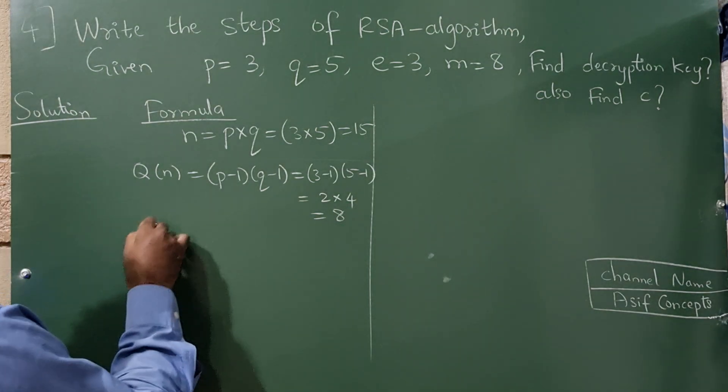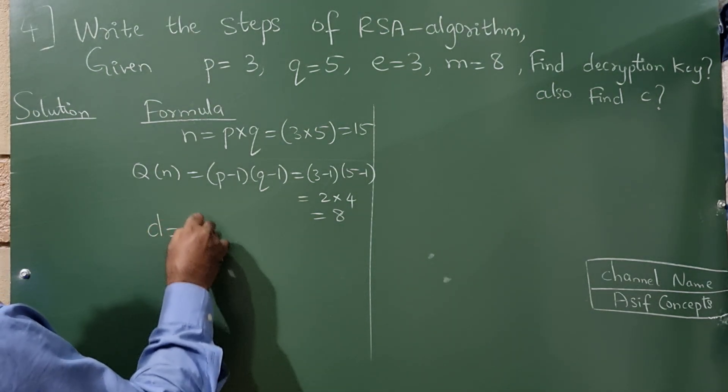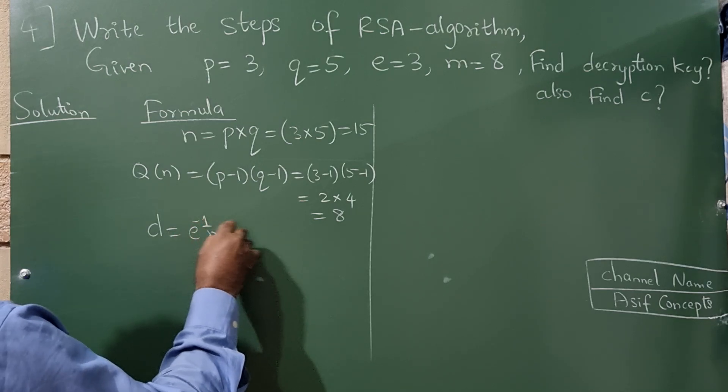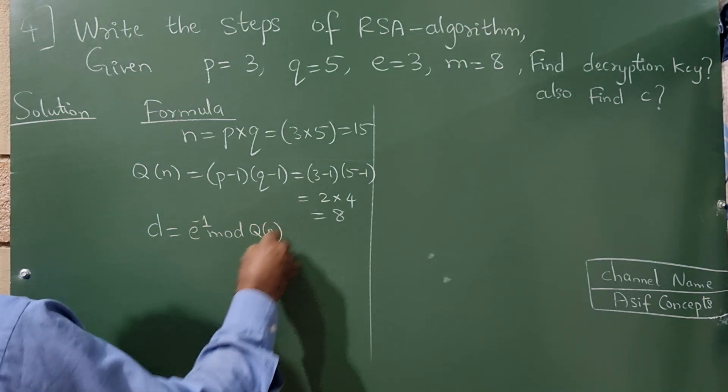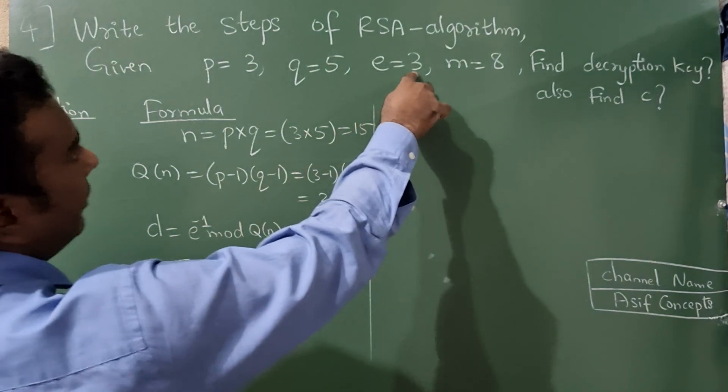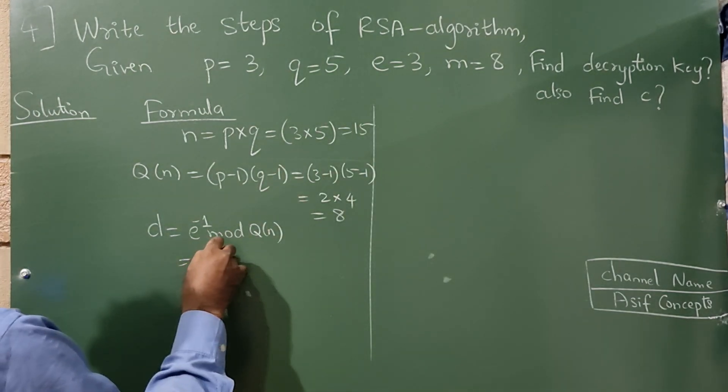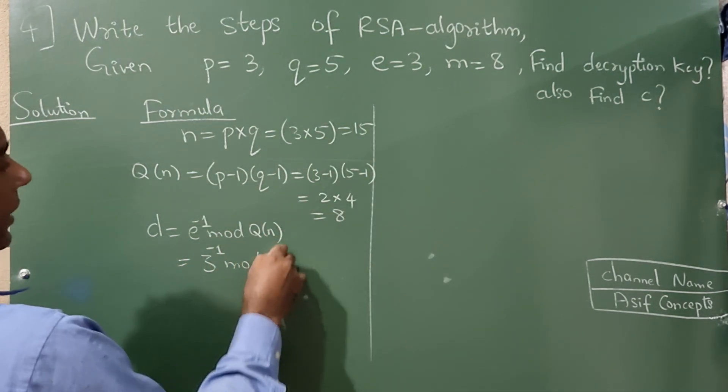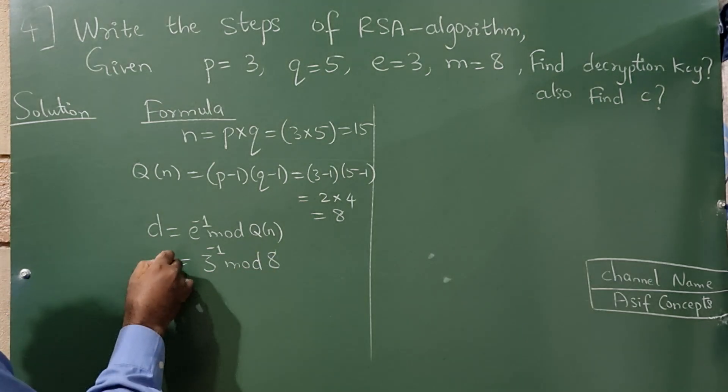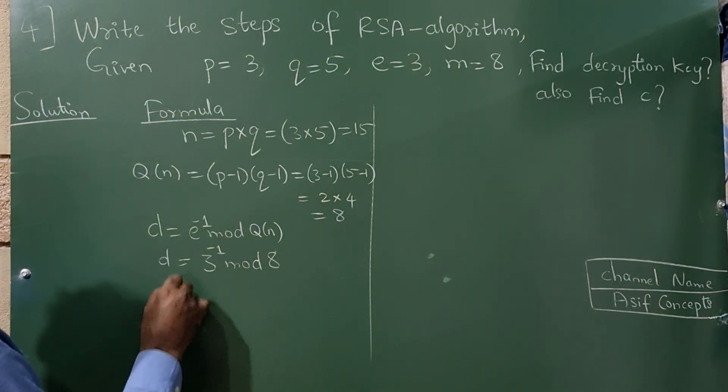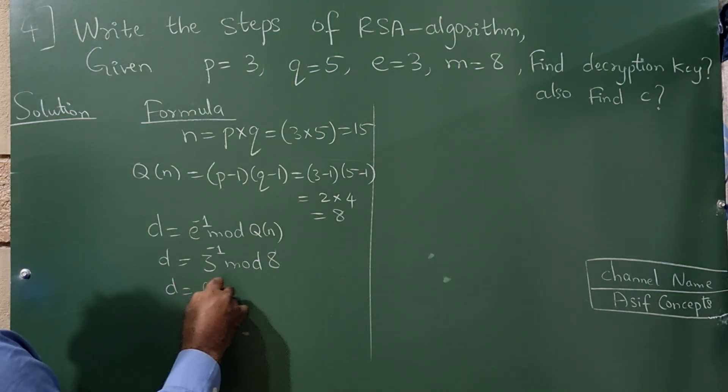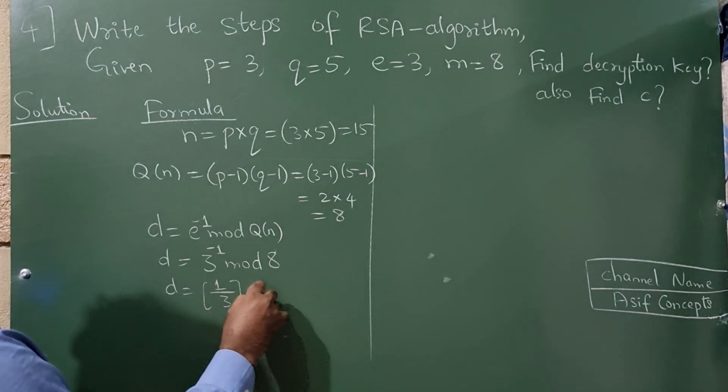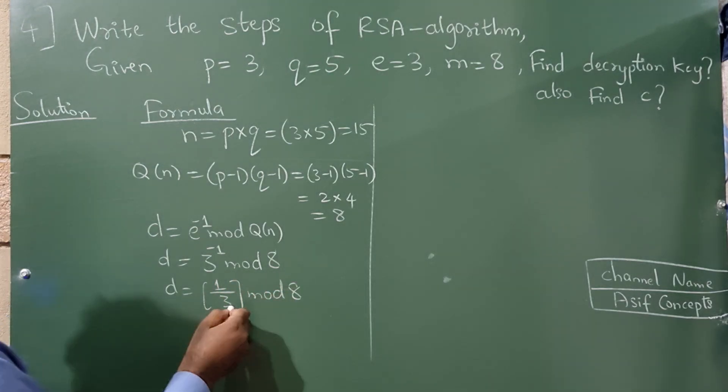Next D is equal to E raise to minus 1 mod of Q(N). Now what is the E value? It is 3, 3 raise to minus 1 mod of Q(N) is 8. So write here D. So D is equal to, this can be written as 1 divided by 3 mod 8.